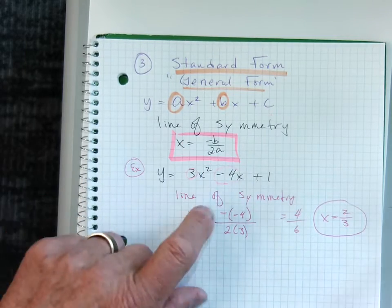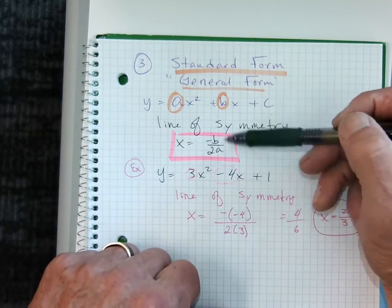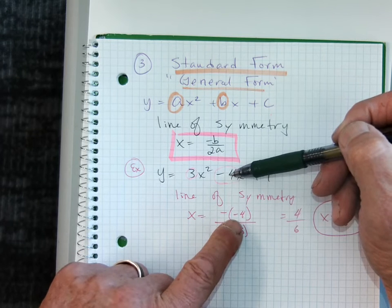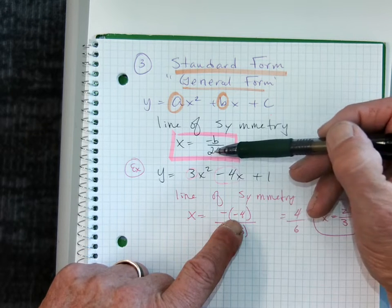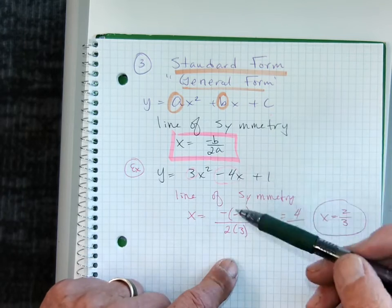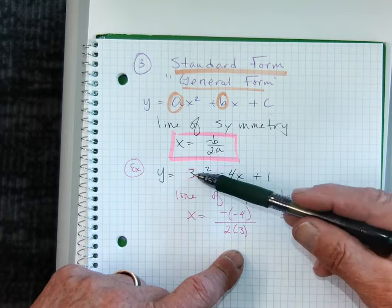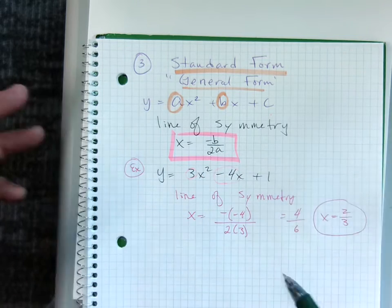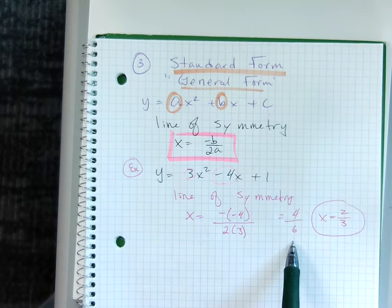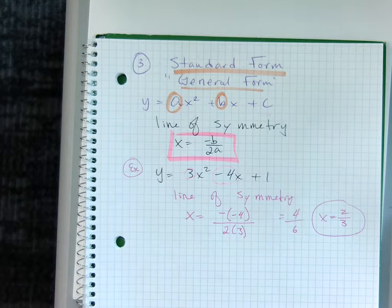I have to plug it into my form. So my negative four goes there. That's my b. So I'm going to go negative negative four divided by two, that's part of the form, times a, and the a value is three. So plug my negative four in here, negative negative four. Plug my three in for a. And I just simplified that, positive four over six, which is x equals two thirds.